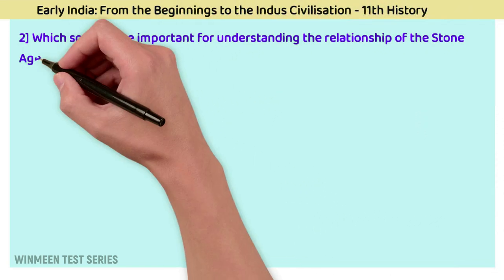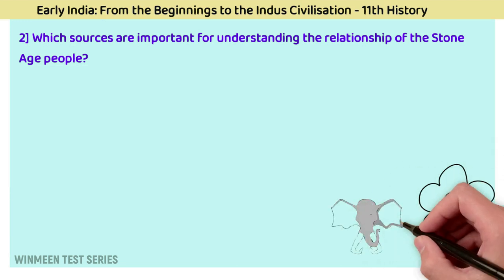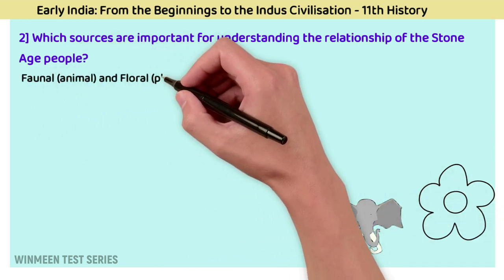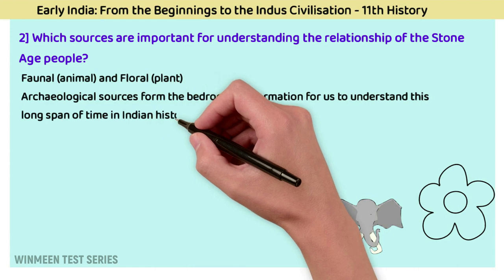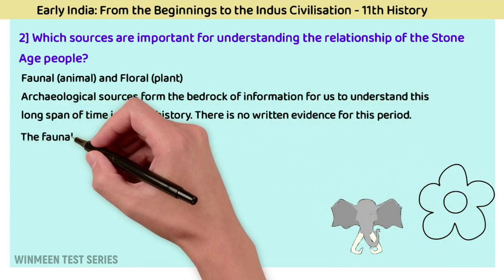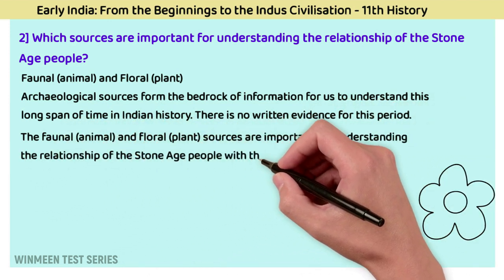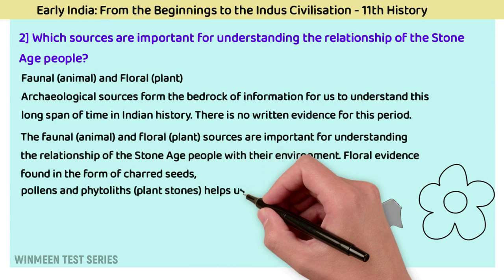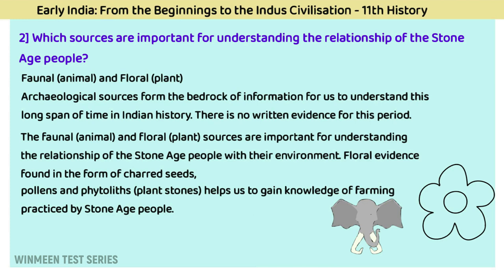Question 2: Which sources are important for understanding the relationship of Stone Age people? The answer is faunal (animal) and floral (plant) archaeological sources. These form the bedrock of information for understanding this long span of Indian history. There is no written evidence for this period. Floral evidence is found in the form of charred seeds, pollens, and phytoliths (plant stones), helping us gain knowledge of farming practiced by Stone Age people.